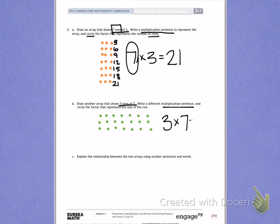So I'm still going to end up with 21. This time, I need to circle the number that means the size of each row. Each row has 7 dots, so I'm going to circle the 7.